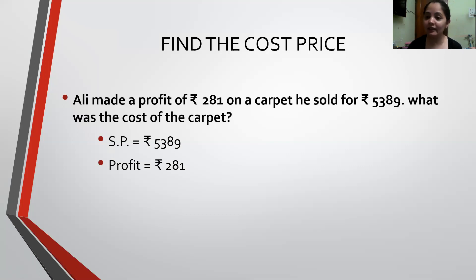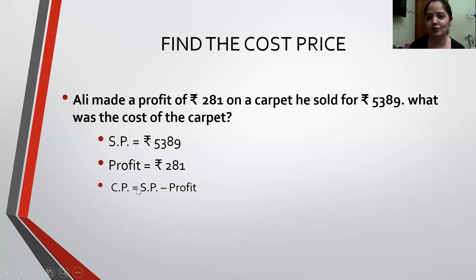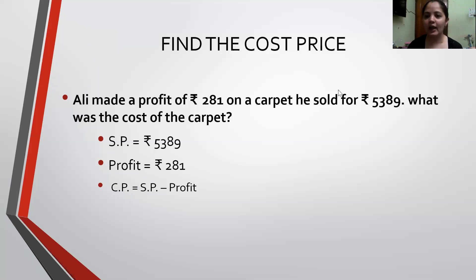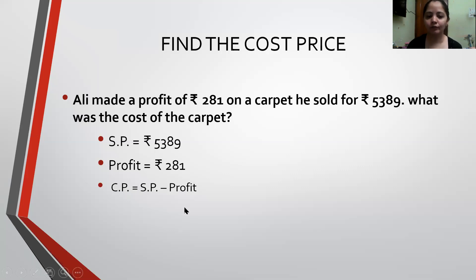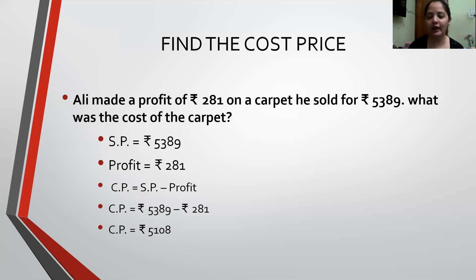Now, in this case it is Profit. That means Selling Price is more than the Cost Price. So how will I find my Cost Price? By subtracting. The Cost Price of the carpet will be Selling Price minus Profit: 5,389 minus 281, which gives a Cost Price of Rs. 5,108.